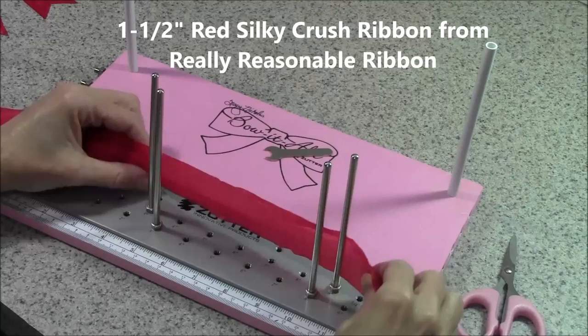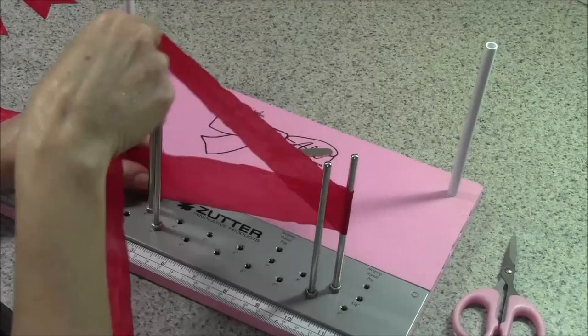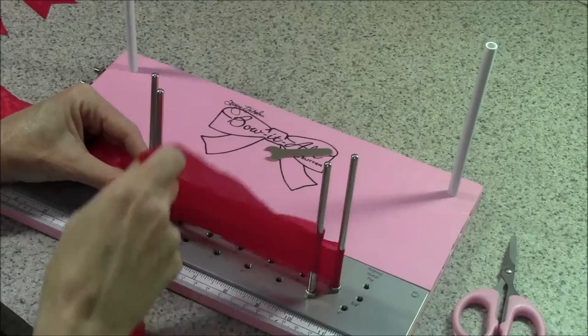We're going to start with the ribbon around the back two pegs. We're going to make a layered bow, so we're going to be wrapping in a figure-eight pattern, alternating between the back and the front pegs until we have six loops on each side.